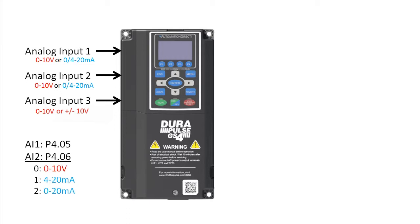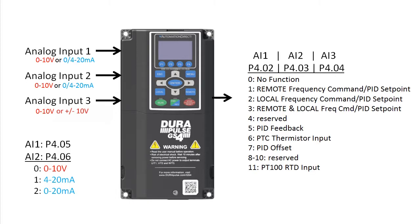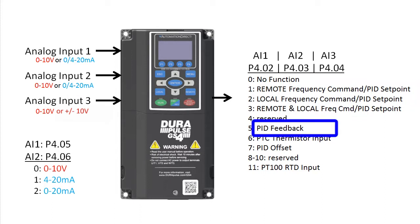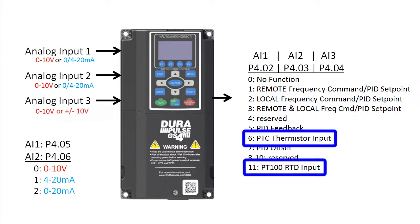The cool thing about these analog inputs is any of them can be used for any of these functions. You can use them to control the frequency of the drive, as a PID set point, feedback or offset, or even use them to monitor the temperature of the drive and automatically generate warnings or faults.